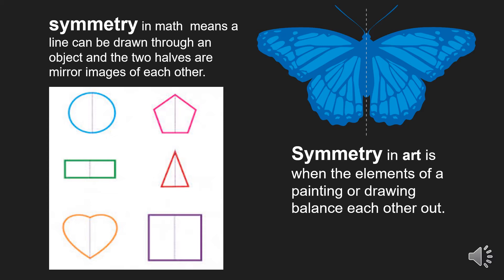Now for the math part. Symmetry in math means a line can be drawn through an object and the two halves mirror each other. So if you take your hands and put your pinkies together, palms face up, your right hand looks like your left hand. That's symmetry.